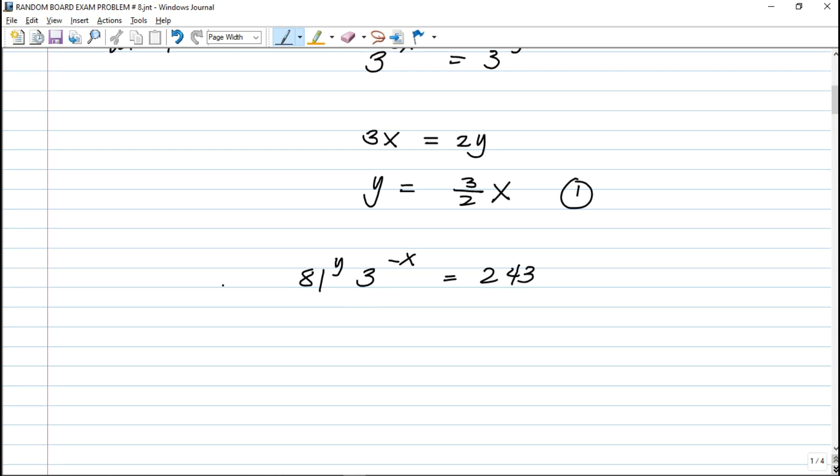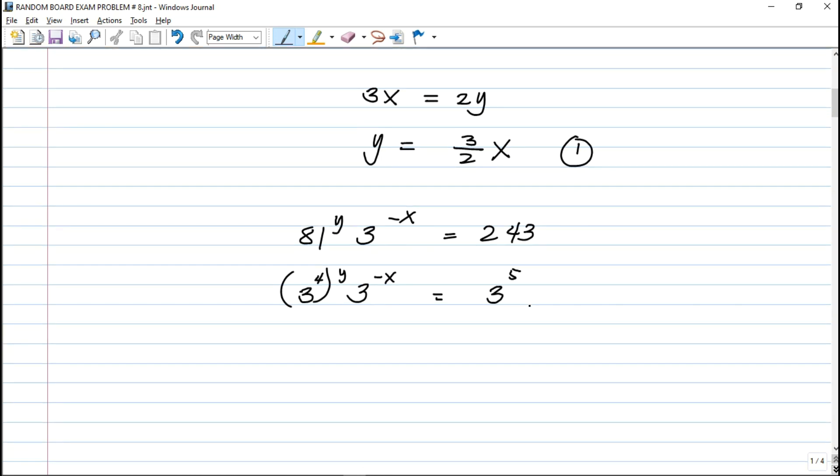81 is divisible by 3. Therefore, we can say that 81 can be expressed as 3. 81 is 3 raised to 4, raised to y. Then we have 3 raised to negative x is equal to - we'll express this as a base of 3. 243 is 3 raised to 5.